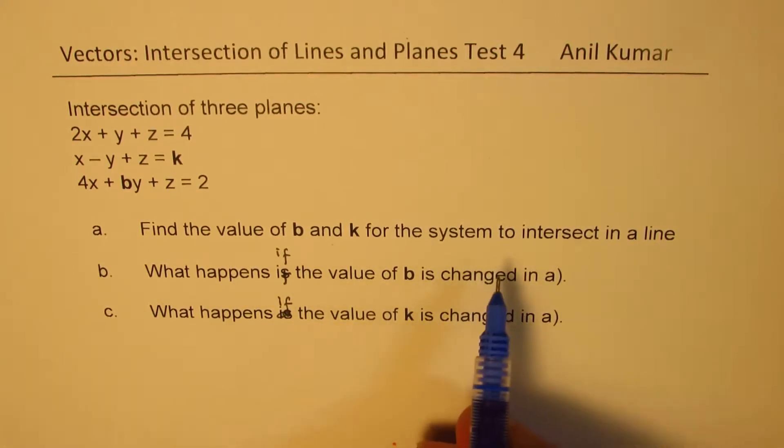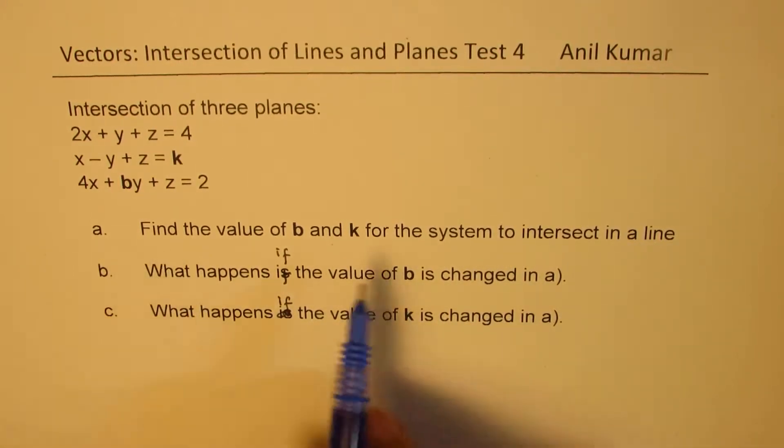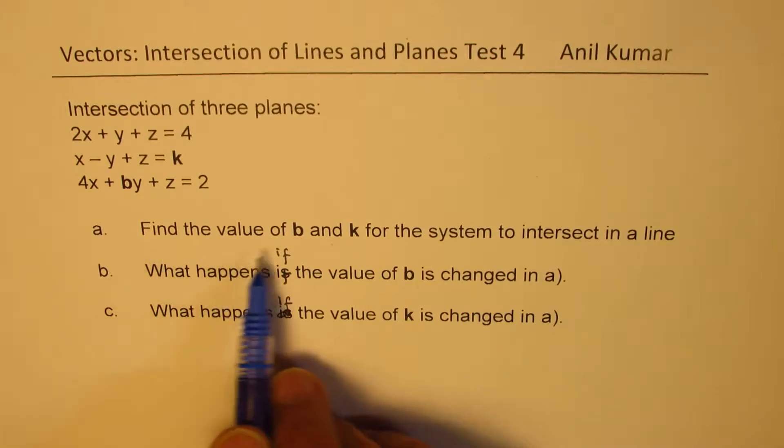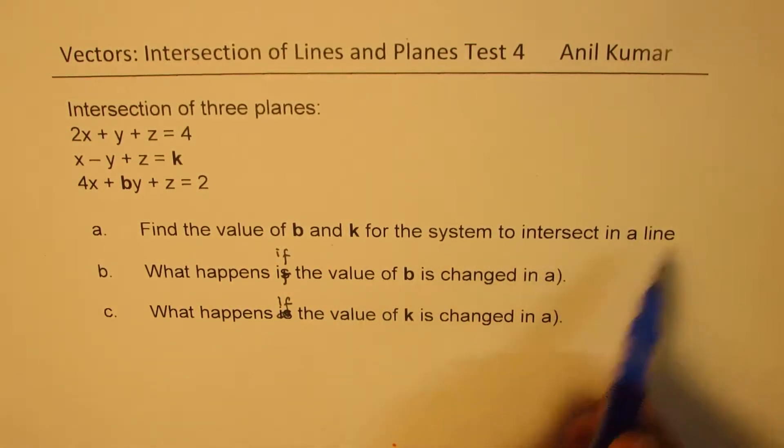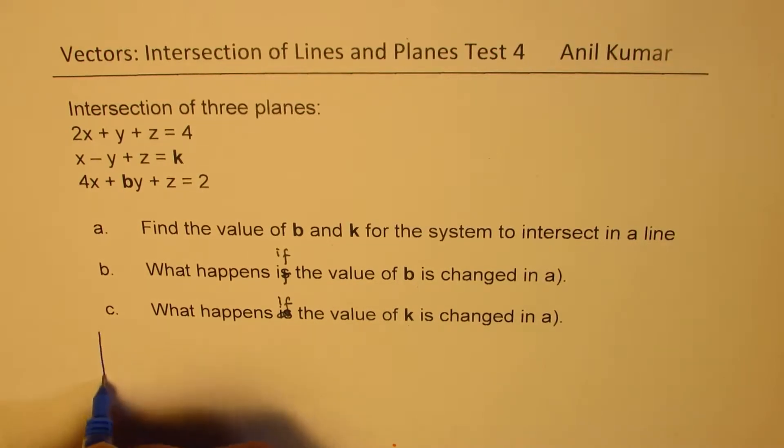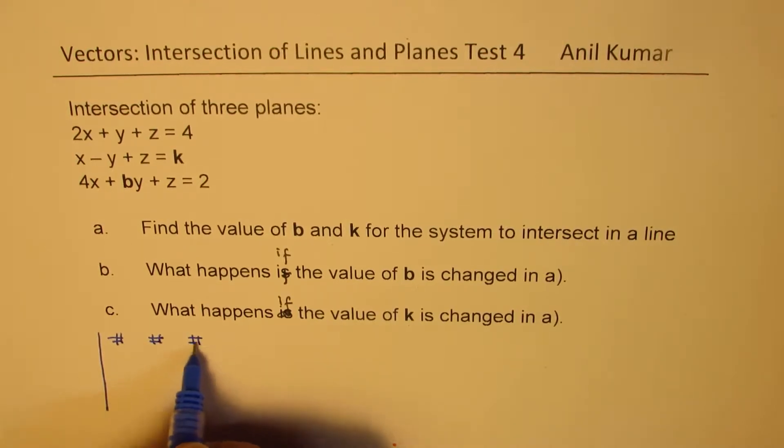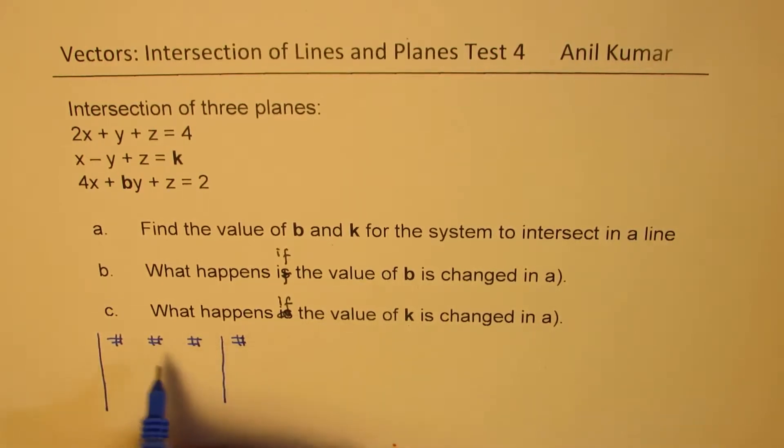Now let's look into the concept. So part a, we need to find the value of b and k for the system to intersect in a line. It really means that if you are working with augmented matrix we are looking for a situation which could be something like this.